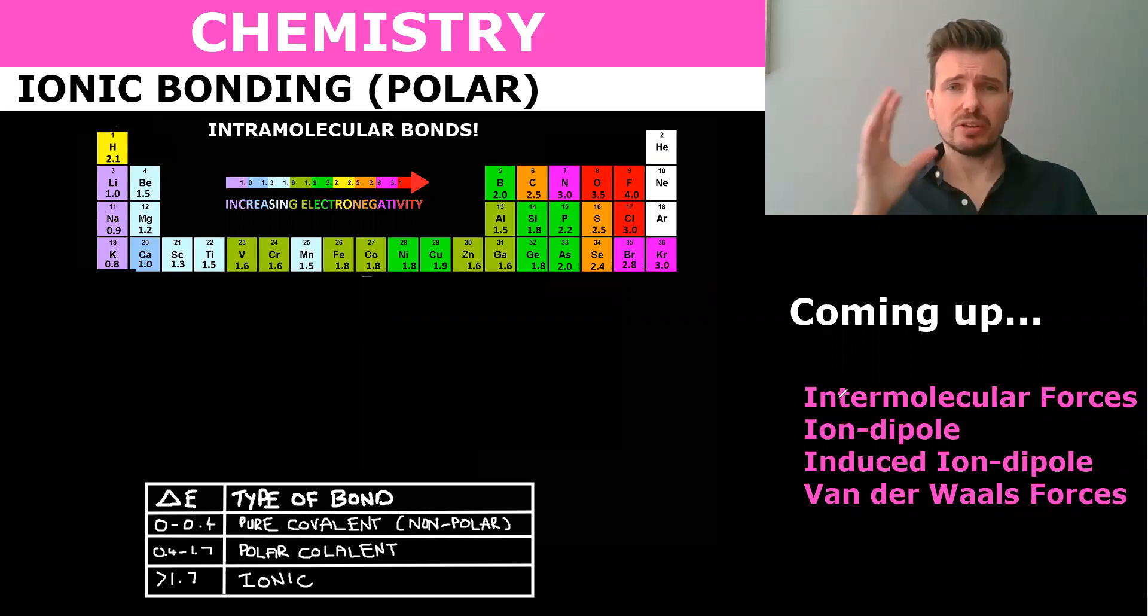Now in the last lesson we looked at polar molecules where there was a covalent bond, meaning that the electronegativity between the two atoms was less than 1.7 but greater than 0.4. Now we're going to look at two elements which have a much larger electronegativity difference, and therefore we get this ionic bond.